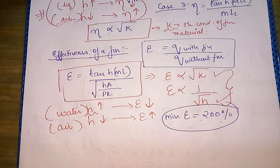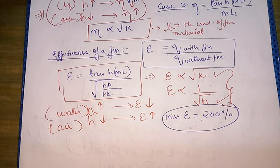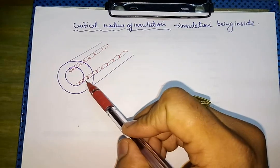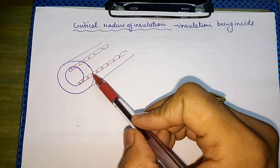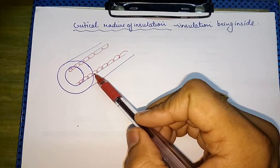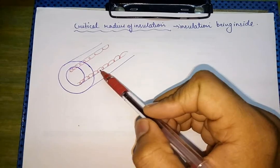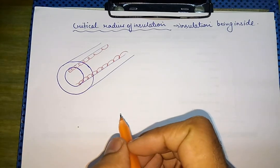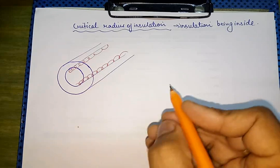One topic that was left — a very important but small one — is the critical radius of insulation. We have already studied it, but we need to address the case where the insulation is provided on the inside surface rather than the outside surface. So today we are going to discuss what happens if the insulation is provided on the inside surface. If insulation is used inside, then the area of contact will decrease.